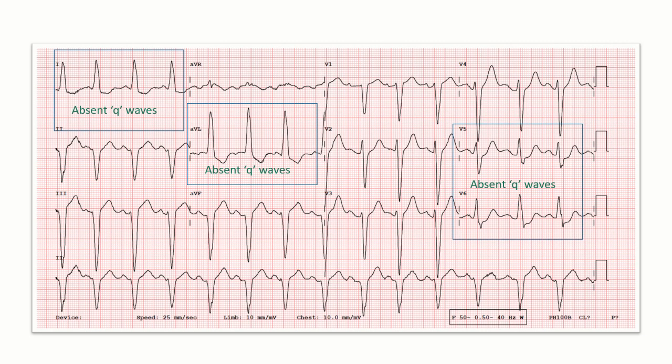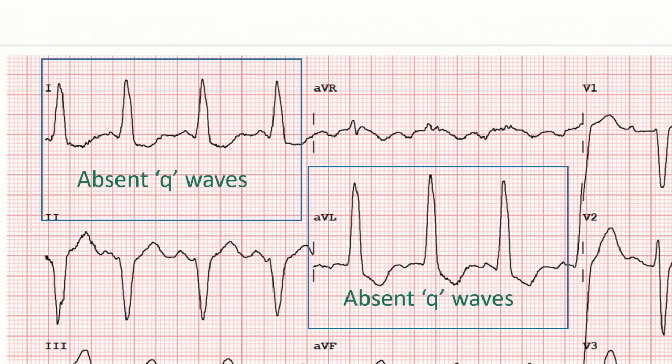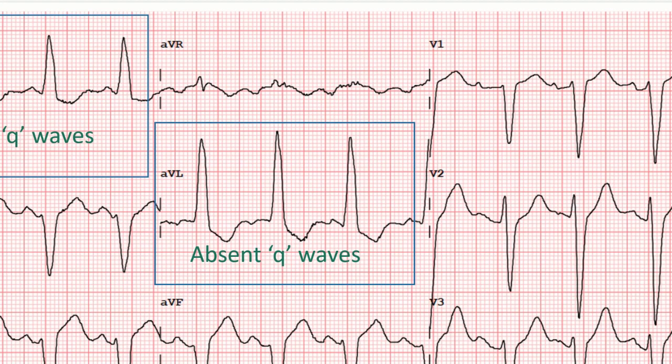Q waves are absent in lateral leads, which are V5, V6, lead I, and aVL. As you can see, there are no Q waves in these leads.